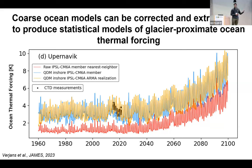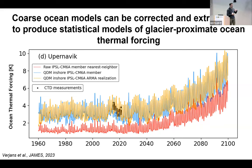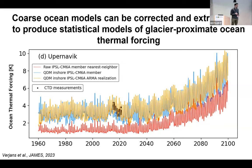Vincent Verjans' work does the same for ocean forcing. Unlike surface mass balance, we don't have high-resolution regional ocean models around the Greenland Ice Sheet. So we developed an extrapolation technique and a bias correction technique using all available observations around Greenland to take coarse continental shelf models and bring them up to the actual ice sheet front. In this example, the red line is what a CMIP-class ocean model gives for ocean forcing near a Greenland glacier, the black dots are observations, and the blue and yellow lines are varying realizations produced by our method.